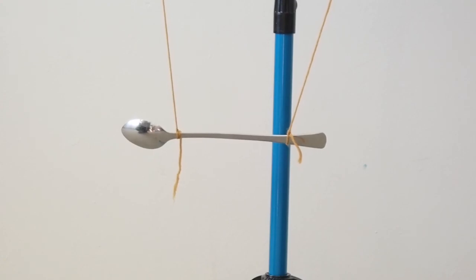So, you could try moving the string further apart or closer together. You could try with different objects, if you had a longer or shorter spoon, and see how that affects it.